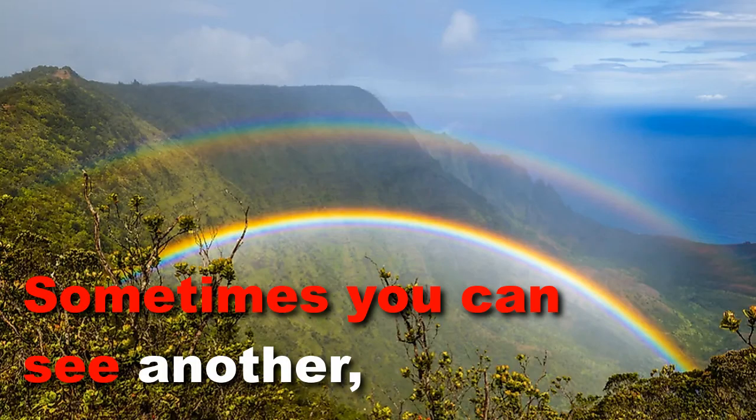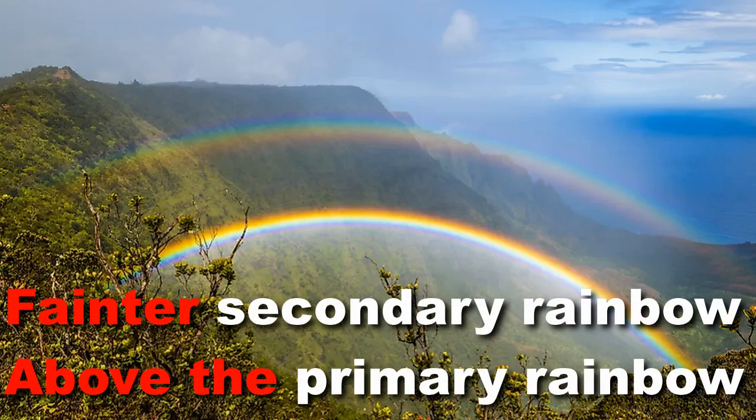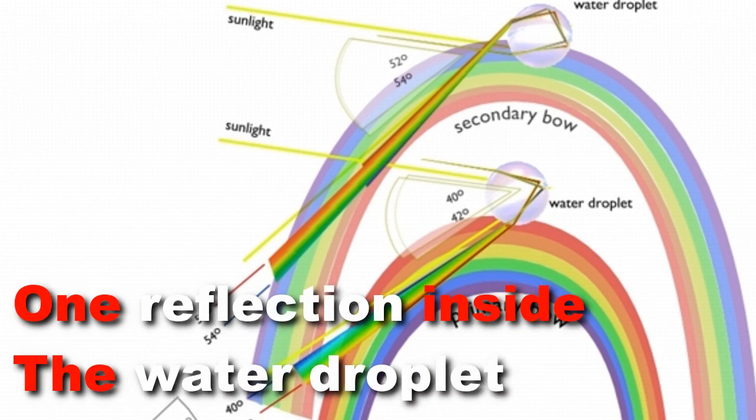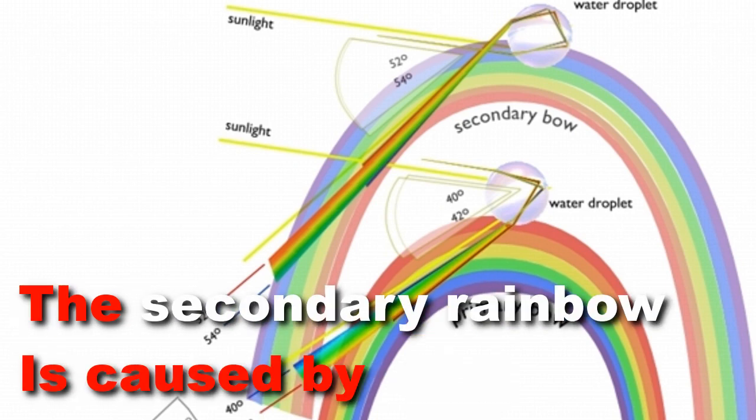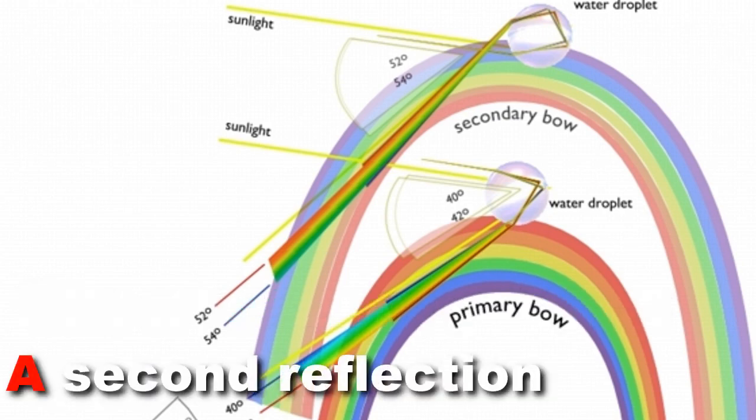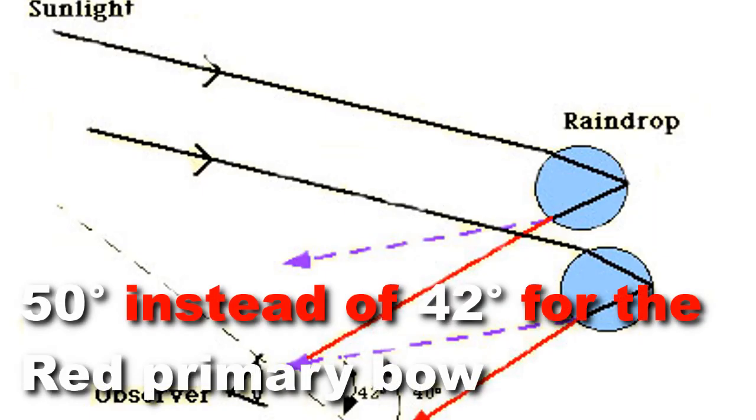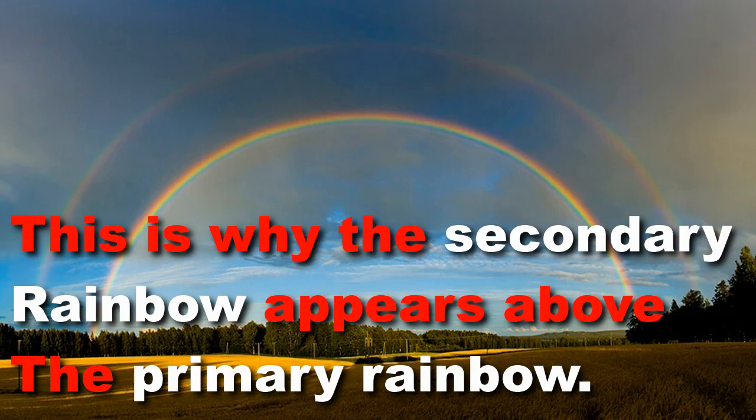Sometimes you can see another fainter secondary rainbow above the primary rainbow. The primary rainbow is caused from one reflection inside the water droplet. The secondary rainbow is caused by a second reflection, and this reflected light exits the drop at a different angle. That is, 50 degrees instead of 42.2 degrees for the red primary bow. This is why the secondary rainbow appears above the primary rainbow.